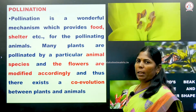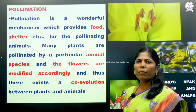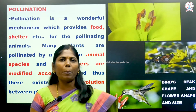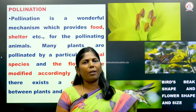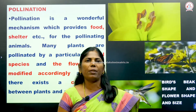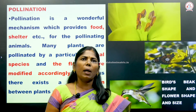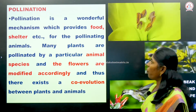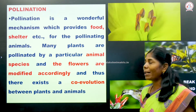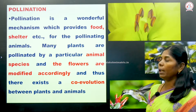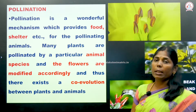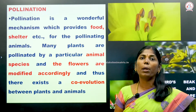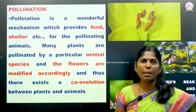What is pollination? Pollination means the transfer of pollen grains from anther to stigma of the same flower or different flower. Pollination is a wonderful mechanism which provides food and shelter for the pollinating animals.